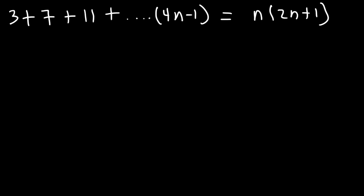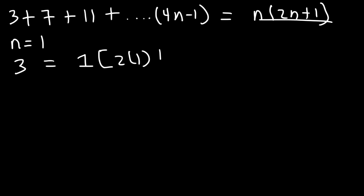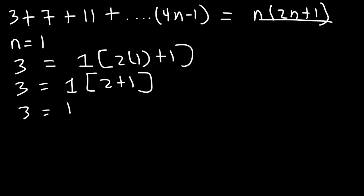Now let's test it out with some numbers. Let's see if it's true for the first term. The first term in this sequence is 3, and n is 1, which represents the sum of terms on the left. So we only have one term, so the sum has to be 3. If we replace n with 1, this is going to be 1 times 2 times 1 plus 1. 2 times 1 is 2, and 2 plus 1 is 3. 1 times 3 is also 3. So it's true for n equals 1.